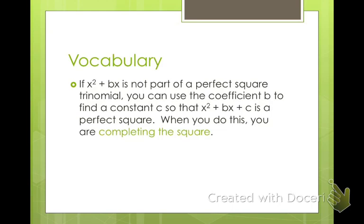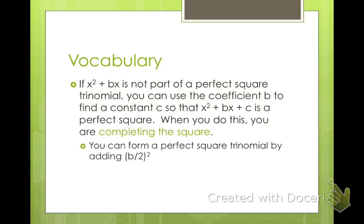For our vocabulary: if x squared plus bx is not part of a perfect square trinomial, you could use the coefficient b — the number in front of x — and find a constant c so that when you add something onto the end, it makes it a perfect square trinomial. When you do this, you're completing the square. To do that, you take b and divide it by 2, square that value, and then add it onto the end. That way, when you factor it, it's (x plus b over 2) quantity squared.